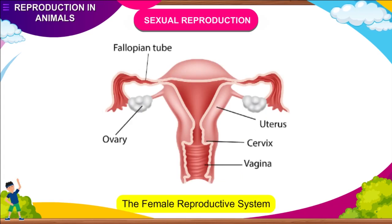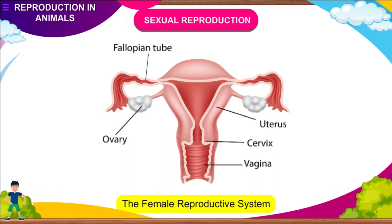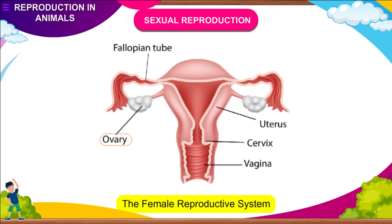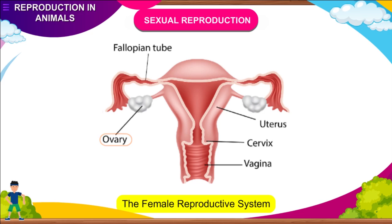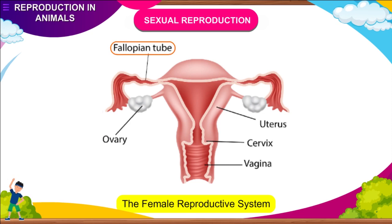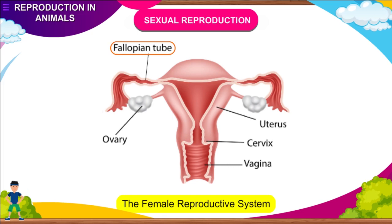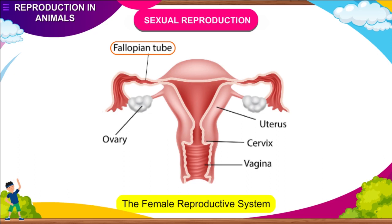The Female Reproductive System has the following organs. Ovaries: each female has two ovaries situated in the abdominal cavity. One mature ovum is produced every four weeks from either of the ovaries. Fallopian Tube (Oviduct): it is a thin, coiled muscular tube that joins the uterus and the ovary. It passes the ova into the uterus by its ciliary action.